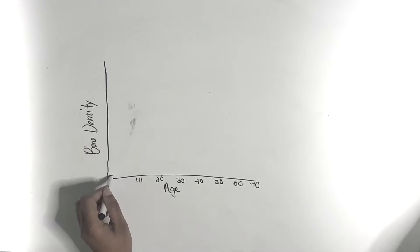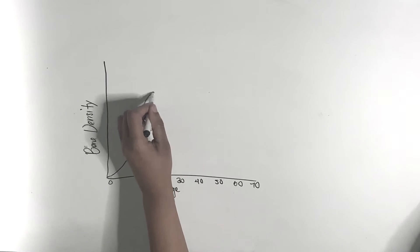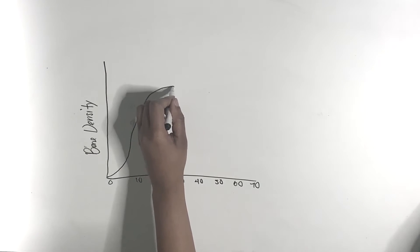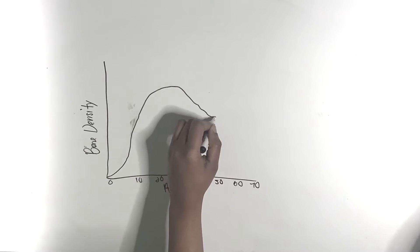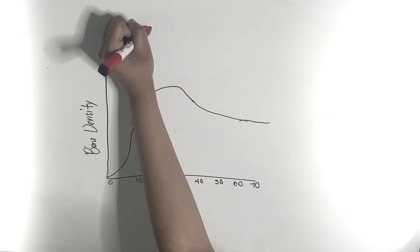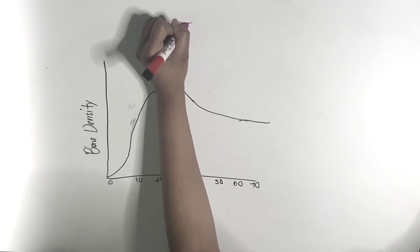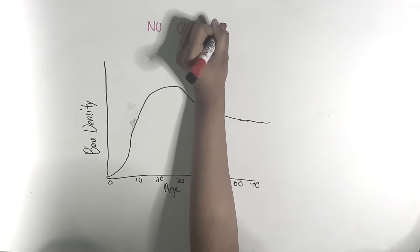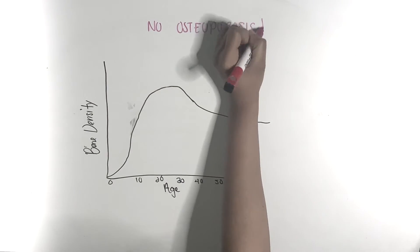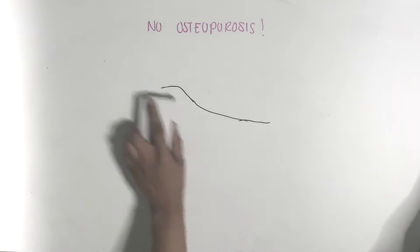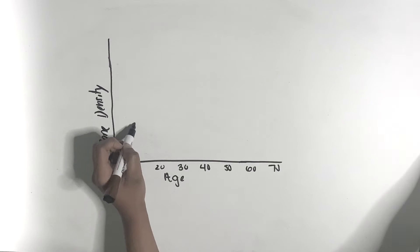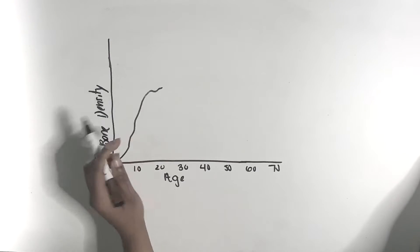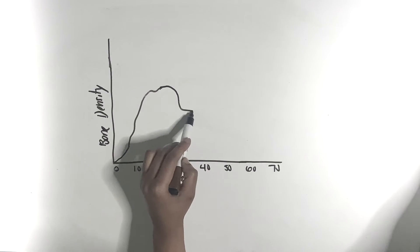This is because at younger ages, your bone mineral density continues to rapidly increase until it peaks at the age of 30. After the age of 30 or around 30, it only begins to decrease from there. With this logic, to prevent osteoporosis, you would want to have the highest bone mineral density possible by the time you're age 70.